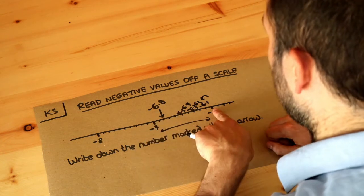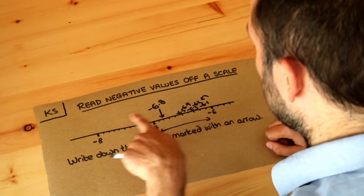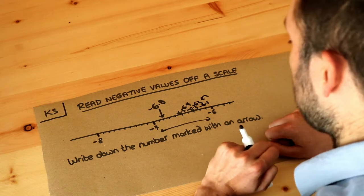So the only key point here is that we go from right to left for negative numbers rather than left to right as we usually would for positive numbers. So the answer is minus six point eight.